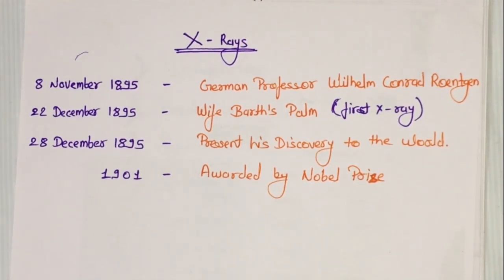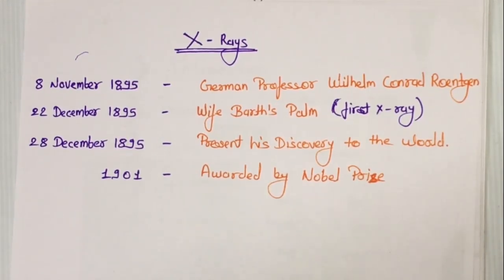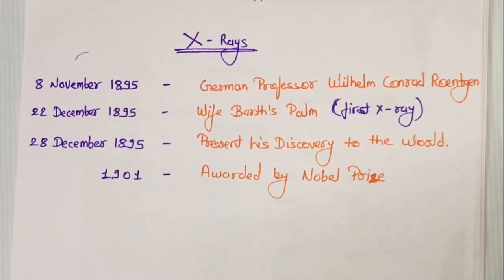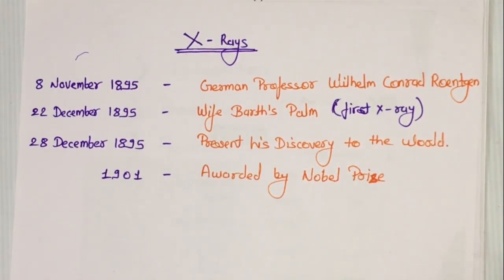On 28 December 1895, he presented his discovery to the world, and for this invention he was awarded the Nobel Prize in 1901. Initially, X-ray studios were opened only for entertainment, but further with time their importance in medical science was found. However, the adverse effects of X-rays were not yet known, causing skin problems, hair fall, body pain, and skin cancer. After the death of Clarence Dally, a helper of Thomas Alva Edison, due to skin cancer from extensive X-ray exposure, research began to find safe methods and safety measures.